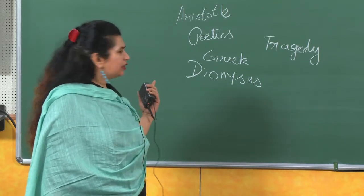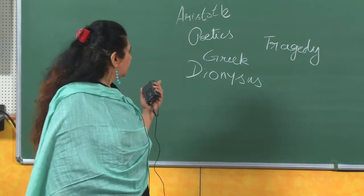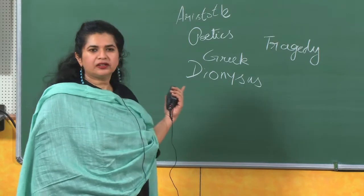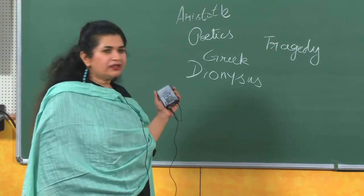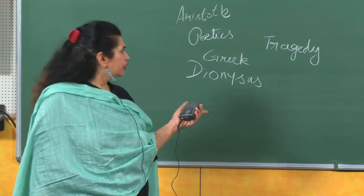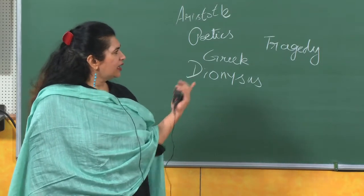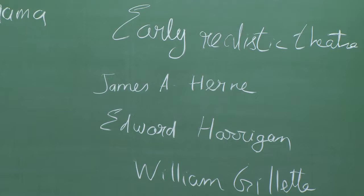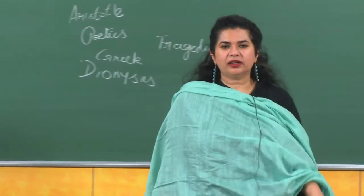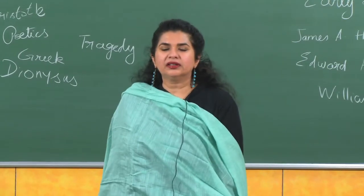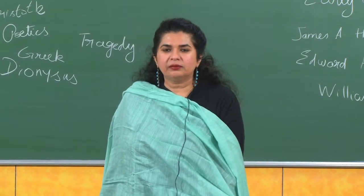You should know Aristotle and his Poetics — we will be referring to it. We will be talking about the Greek concept of Dionysus and the development of tragedy, and then early realistic theatre — who were the exponents of realism in early American theatre — people like James A. Herne, Edward Harrigan and William Gillette. These are names I have written just so you get a better understanding, but there will be more.